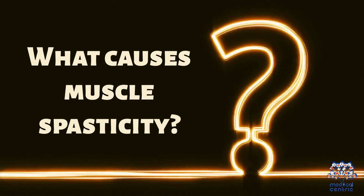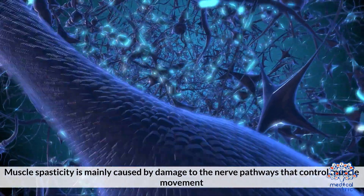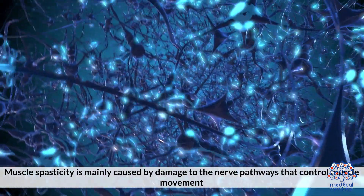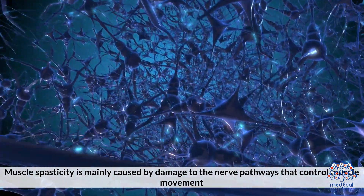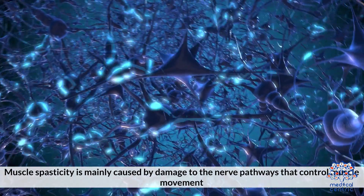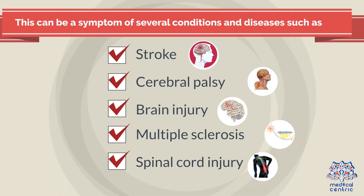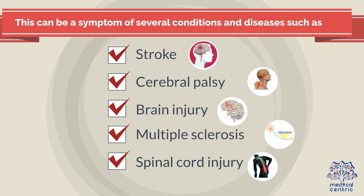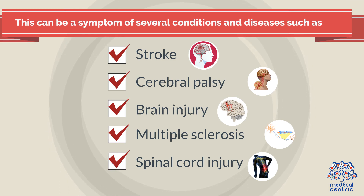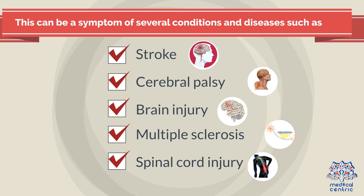What causes muscle spasticity? Muscle spasticity is mainly caused by damage to the nerve pathways that control muscle movement. This can be a symptom of several conditions and diseases such as stroke, cerebral palsy, brain injury, multiple sclerosis, spinal cord injury, and many more.